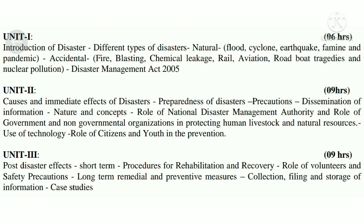Pandemics are also natural disasters — for example, when COVID-19 started, it was classified as a natural disaster. In chemical factories, we have seen fire accidents and news about fires. Road tragedies and nuclear pollution are also examples of accidental disasters. The Disaster Management Act covers all of these.